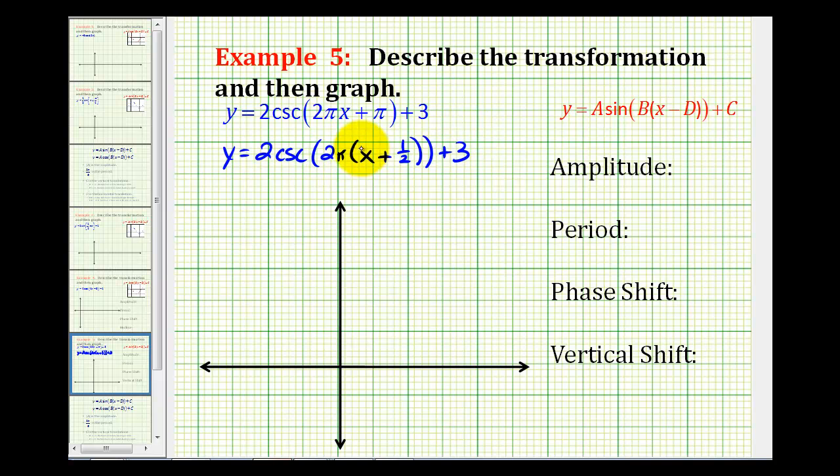Let's check this. Two pi x and two pi times one half does equal pi. So now it's in the form that we need to recognize the values of a, b, c, and d.